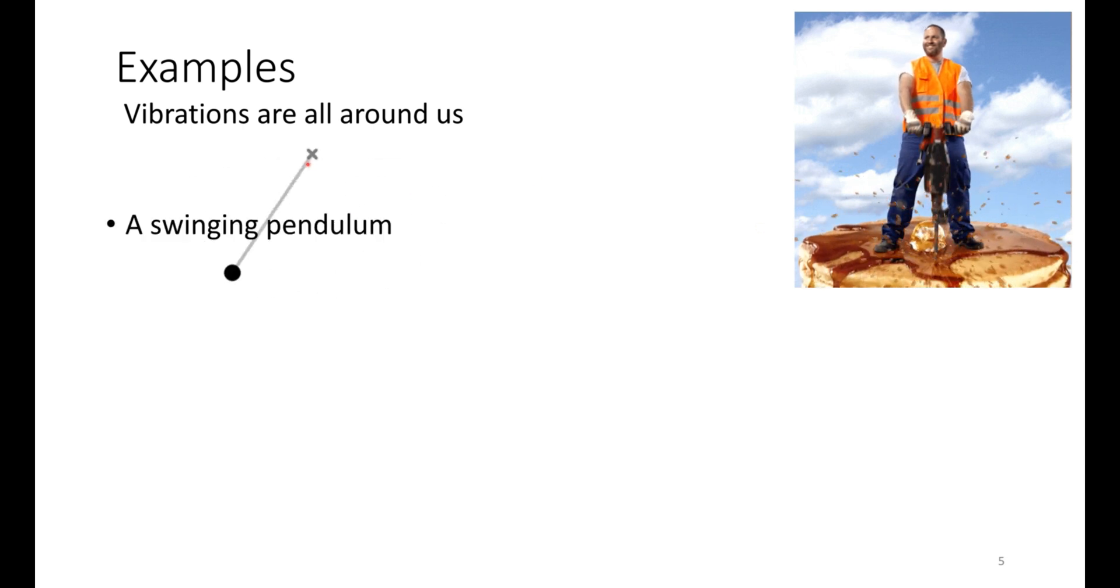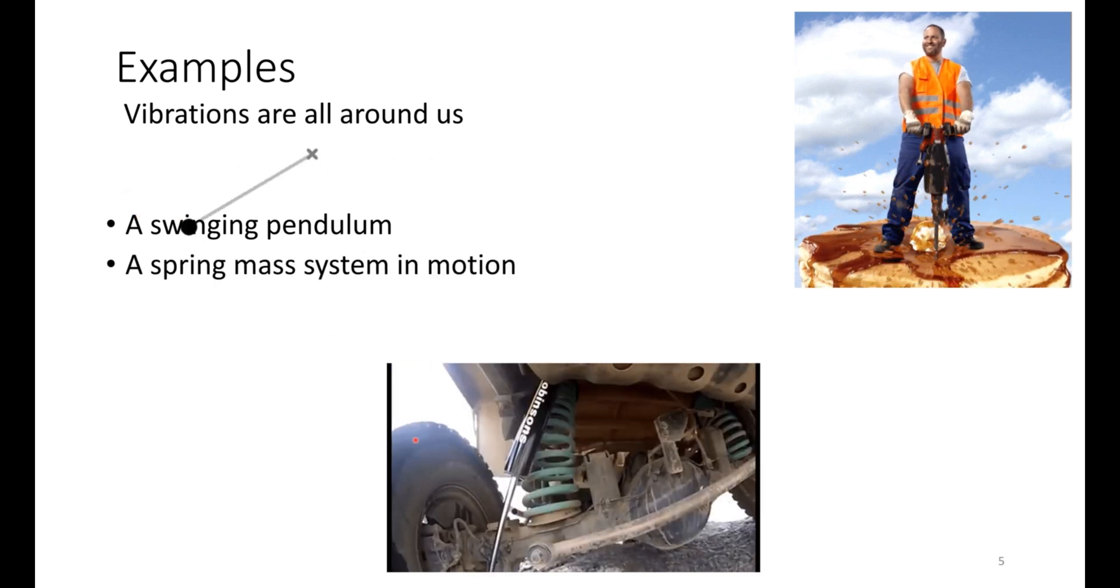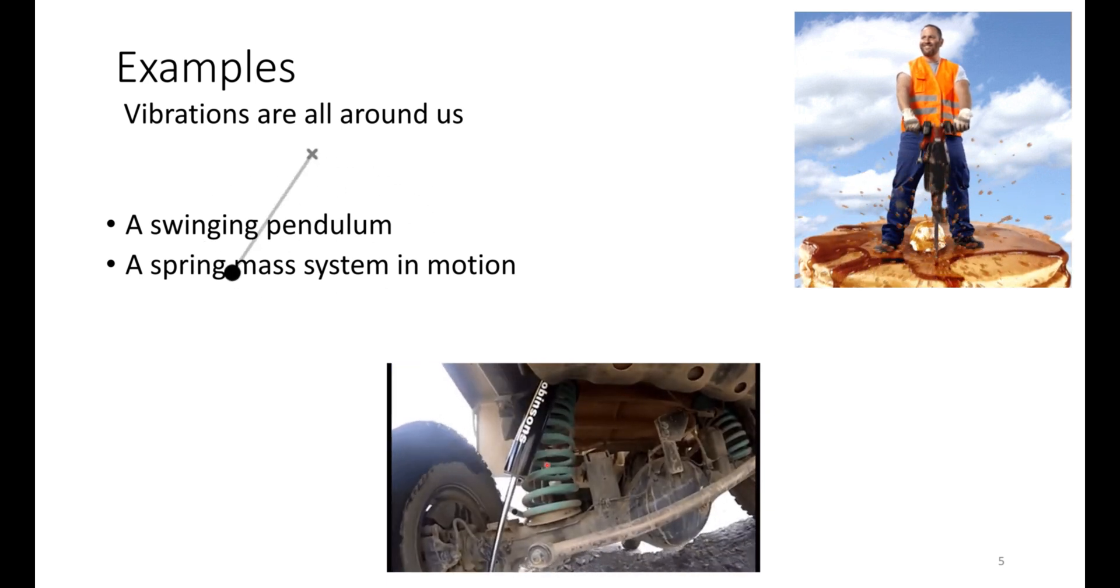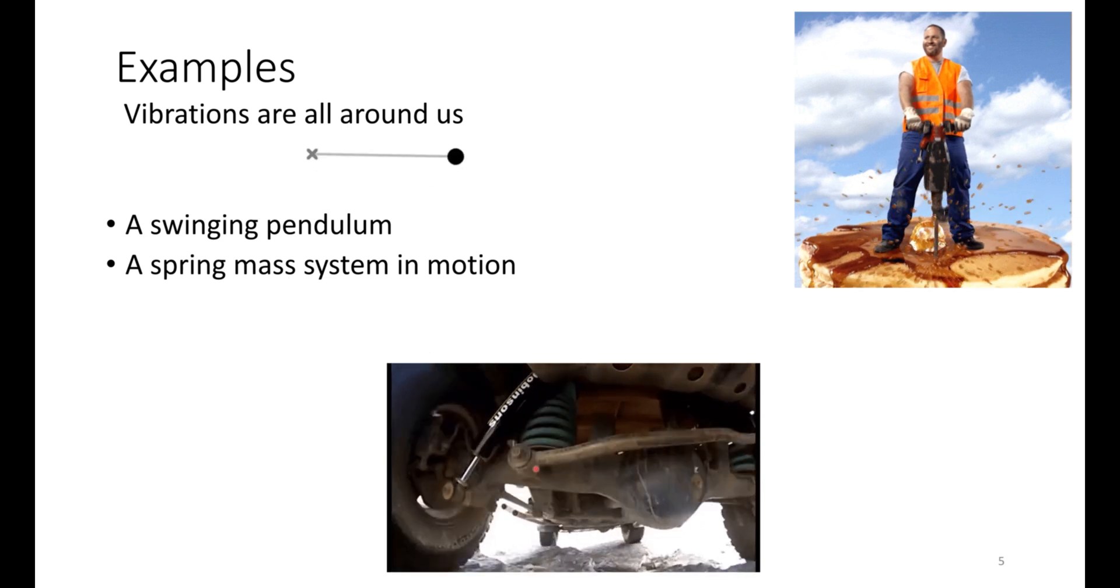You can also see a swinging pendulum which has oscillations, which can be known as a vibrating body. Then you can see a spring mass system in a car, and that spring mass system while in motion is an example of a vibration system.